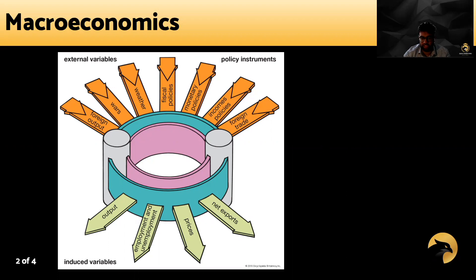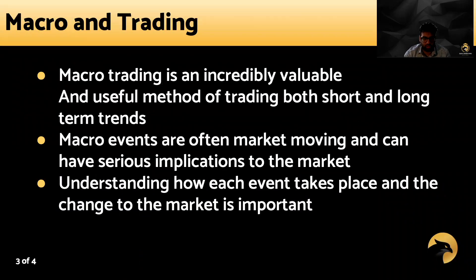Macroeconomists look at a number of external variables and policy implementations taken by governments, thus leading to outputs and externalities we see and hear about every day. Macro events like jobs reports, Federal Reserve minutes, and GDP data can give a deep and insightful look into how an economy is running.